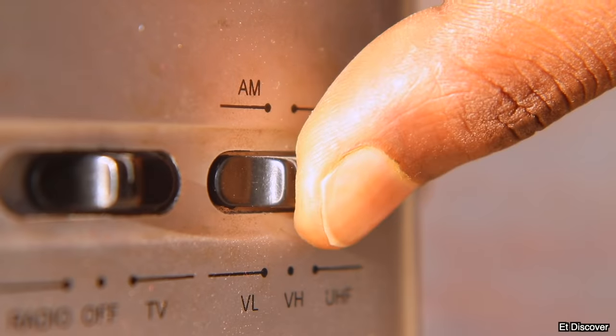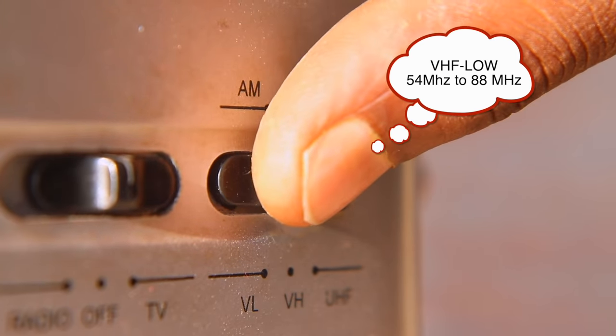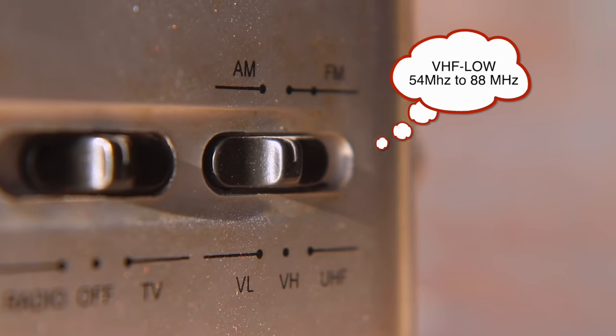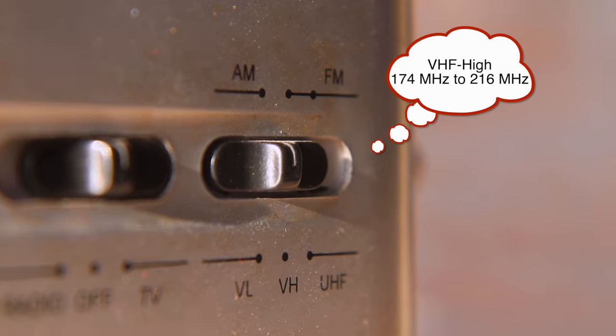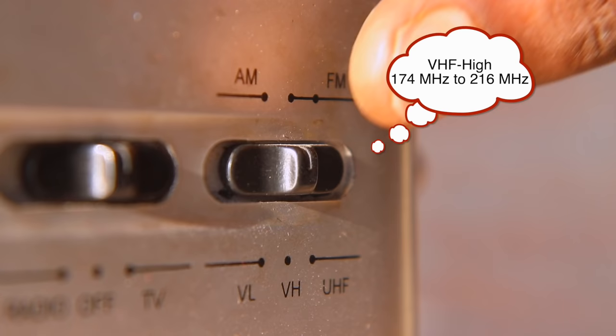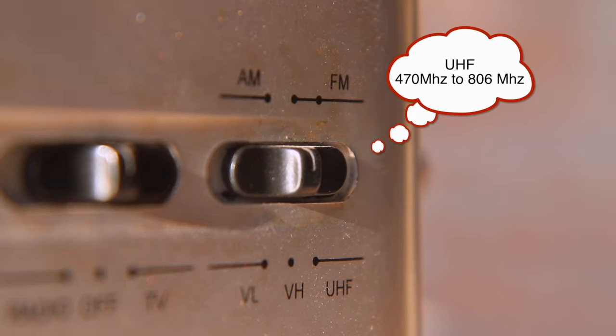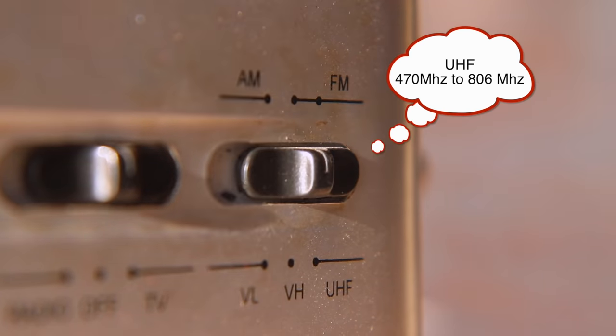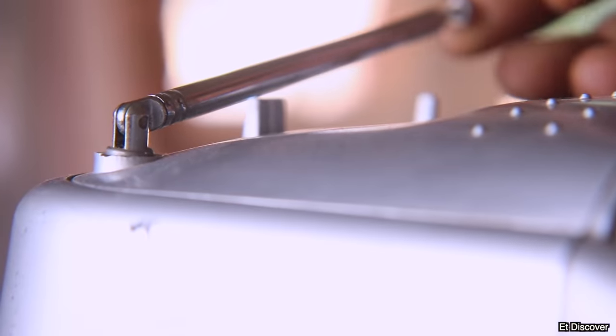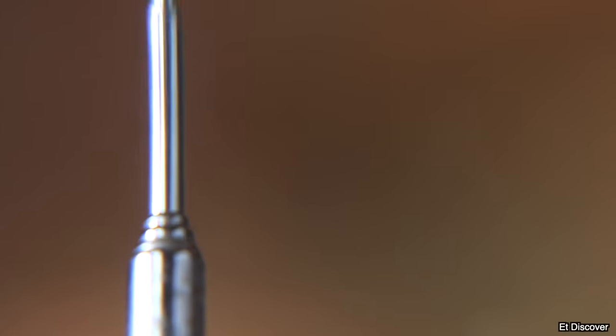In TV, the first band VHF low has range between 54MHz to 88MHz. And the second band VHF high has range from 174MHz to 216MHz. And the last UHF band has range from 470MHz to 806MHz. I want to transmit my signal in VHF high band, so I have to make a proper transmitter.